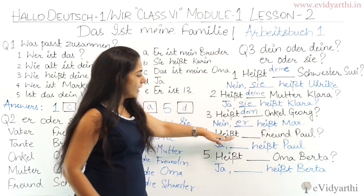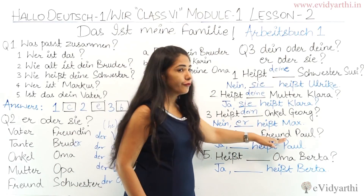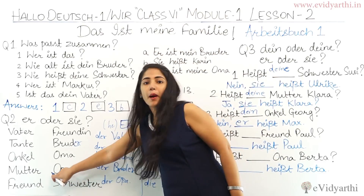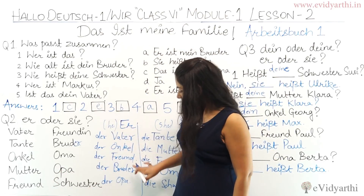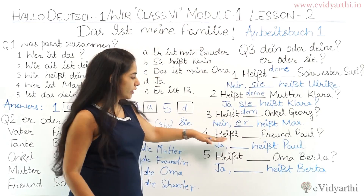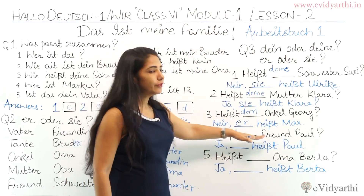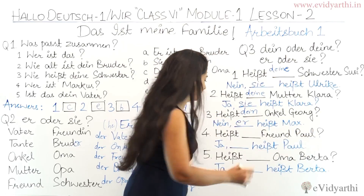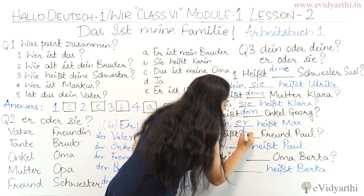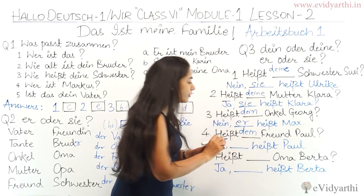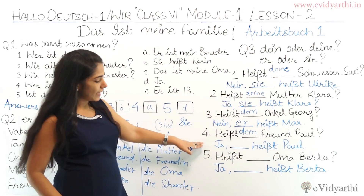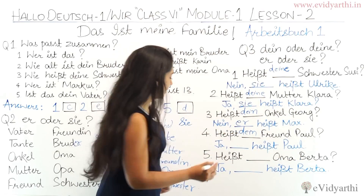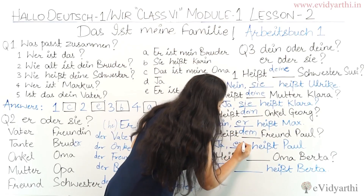Next: 'Wie heißt dein Freund, Paul?' — 'Freund' is masculine, so 'dein Freund.' The answer uses 'er' because it's masculine. 'Er heißt Paul.' So: 'Wie heißt dein Freund?' — 'Er heißt Paul.'